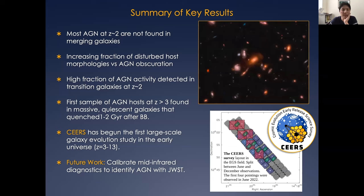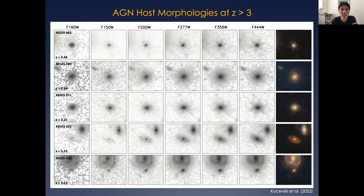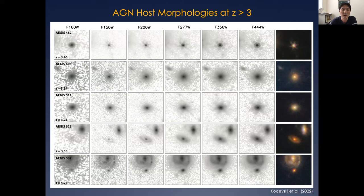Nice talk. I'm wondering about those quenched AGN host galaxies — whether they would be radio loud. If you have a black hole mass proxy and the X-ray measurement, you can use the black hole fundamental plane to estimate radio luminosity. The VLASS three-gigahertz continuum survey has 2.5 arcsecond resolution and covers pretty much all sky. I haven't yet looked at these sources in VLASS — we submitted the paper a couple of weeks ago — but that would be a great thing to follow up on.